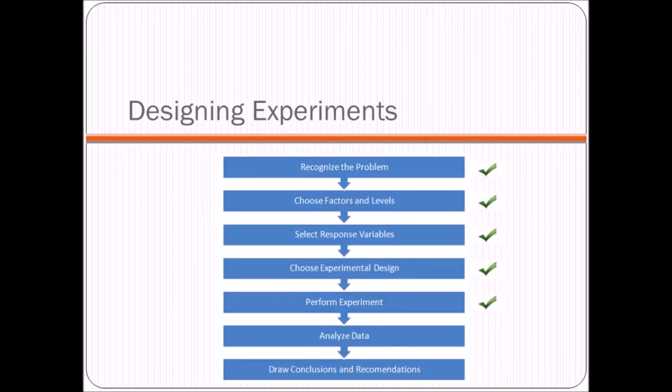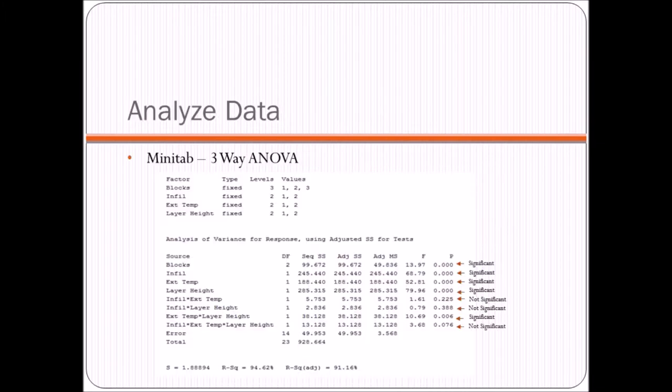So the next logical step after performing the experiment is, of course, to analyze the data. In order to analyze the data, we used a three-way ANOVA in Minitab. Just a little side note before we can truly discuss this is to explain blocking, which is the first row of the data. What this means is simply the location of the part on the printer. We printed them three at a time. So we wanted to just control that and make sure that the location of the part was not messing with our end results. And as you can see from the p-values, blocking actually was significant. So it's very important that we measured that.